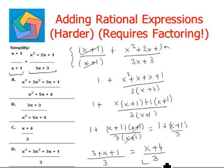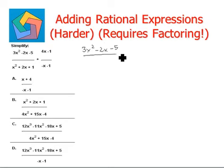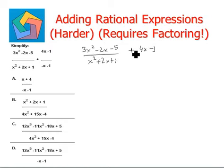This is the final answer and can be seen in option C. Let's try the next question. We have 3x squared minus 2x minus 5, divided by x squared plus 2x plus 1, plus 4x minus 1, divided by negative x minus 1.